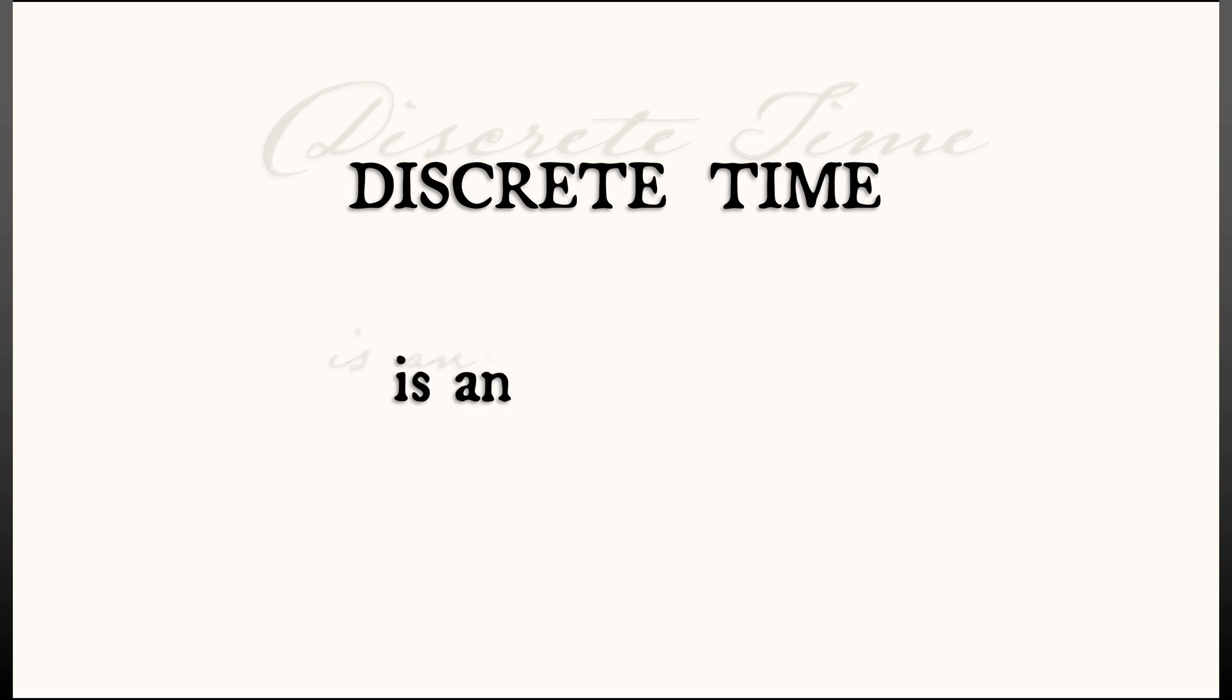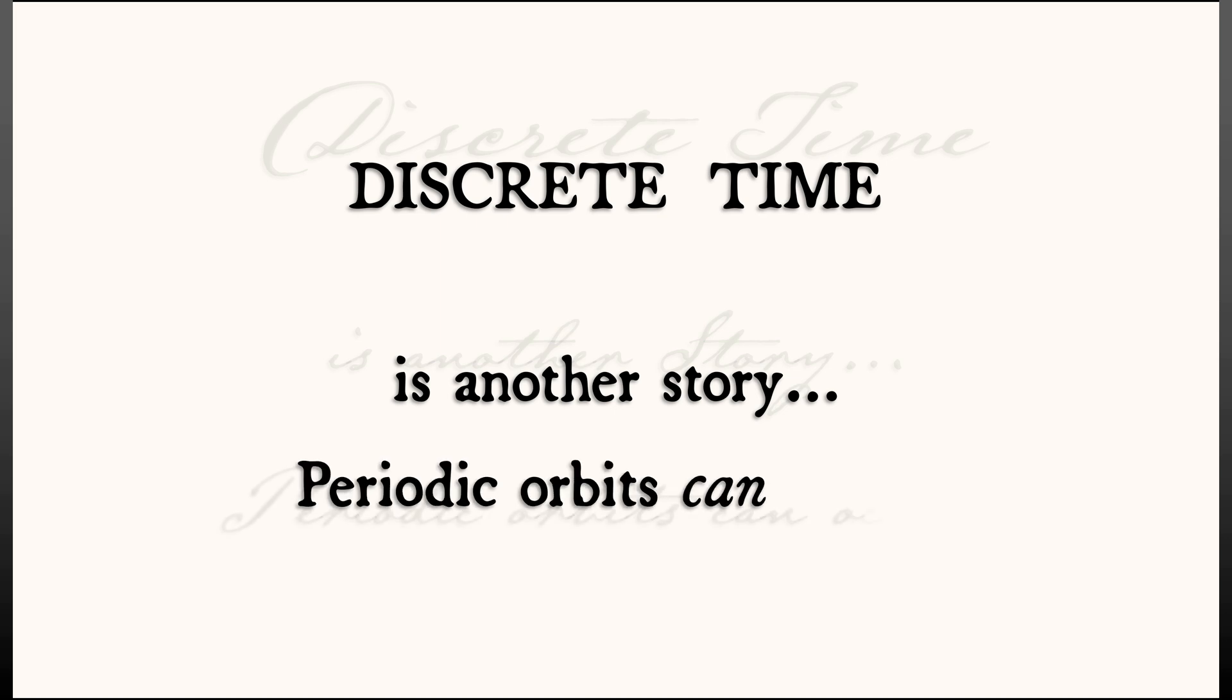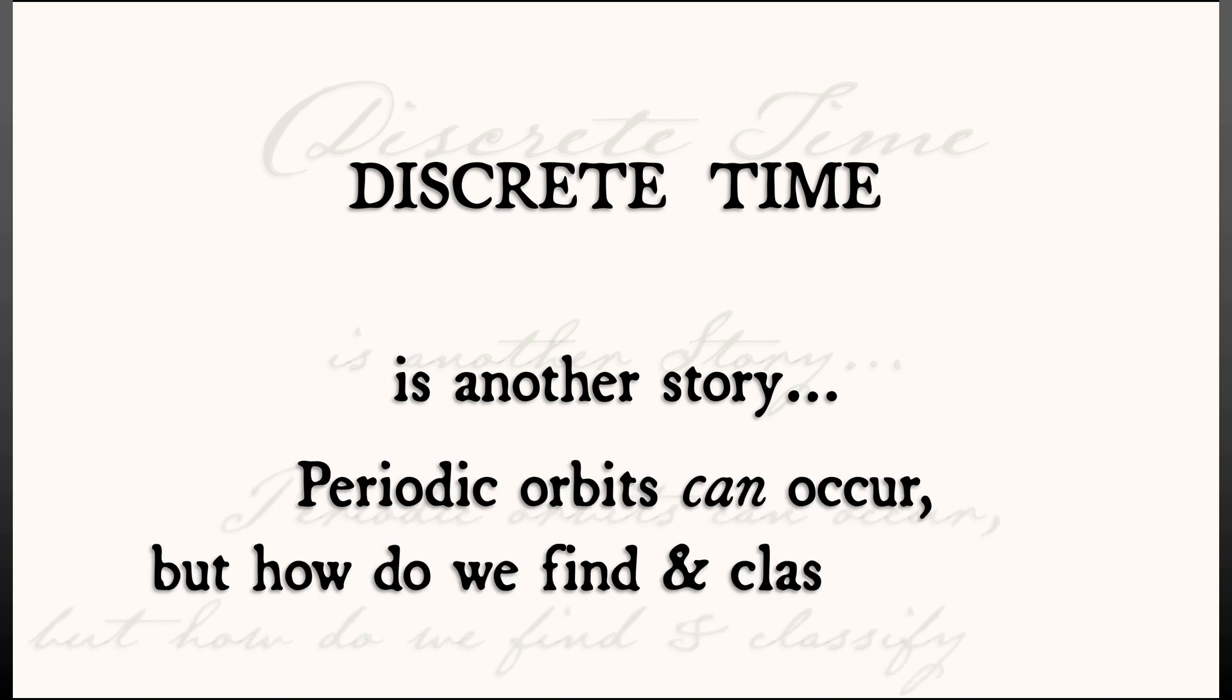We do know that periodic orbits can occur in discrete time-dynamical systems. But how? How do we find them? How do we make sense of them?